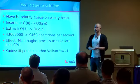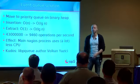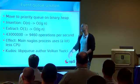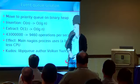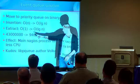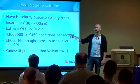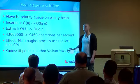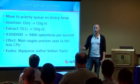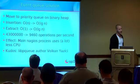For the event queue, we moved to a priority queue based on a binary heap. You'll likely find something called libpq, written by Volkan Yazici, used in the Apache web server. We turn insertion from O(N) to O(log N). Instead of doing 43 million operations per second, we now do 9,460. This change alone made Nagios stop hogging 99% of one CPU while running. Special kudos to libpq author Volkan Yazici.